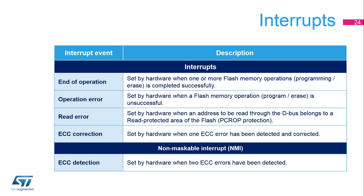Four interrupts can be generated by the flash memory. The end-of-operation interrupt is triggered when one or more flash program or erase operations complete successfully. The operation error interrupt is triggered when a flash memory program or erase operation failed. The read error interrupt is triggered when an address read through the core data bus belongs to an area protected by the PCROP option. The ECC interrupt is triggered when one ECC error is detected and corrected. When two ECC errors are detected, a non-maskable interrupt is generated.